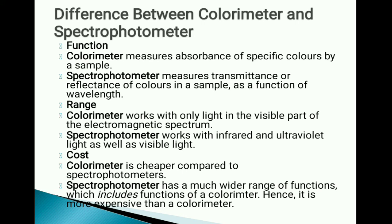Now let us talk about the difference between a colorimeter and a spectrophotometer. Function: colorimeters measure absorbance of a specific color by a sample, whereas a spectrophotometer measures transparency and reflectance of color in the sample as a function of wavelength. In a colorimeter we have a range of wavelengths, whereas in a spectrophotometer we can measure the absorbance at a particular wavelength. Ranges: a colorimeter works only with light in the visible part of the electromagnetic spectrum, whereas a spectrophotometer works with infrared and ultraviolet light as well as visible light. Regarding cost, a colorimeter is cheaper compared to a spectrophotometer, whereas a spectrophotometer has a much wider range of functions — including the functions of a colorimeter — and hence is more expensive.